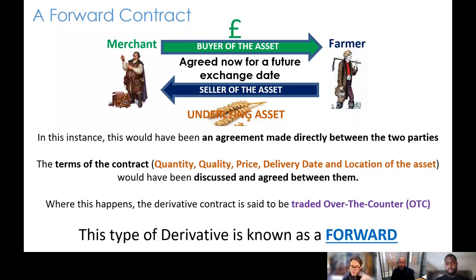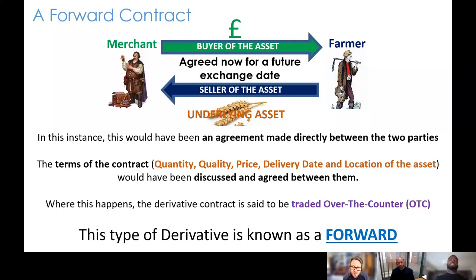A forward is when the asset would be delivered at a future date, with everything agreed prior — potentially a number of months in advance. All of those terms between the two parties would have been negotiated directly. The merchant and the farmer determined all of it themselves — there was no exchange dictating or setting the terms. An over-the-counter derivative contract like this is what is referred to as a forward, and that also explains what the term over-the-counter means in relation to a forward contract.